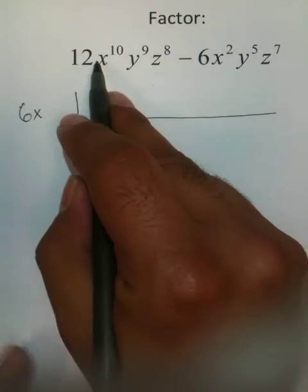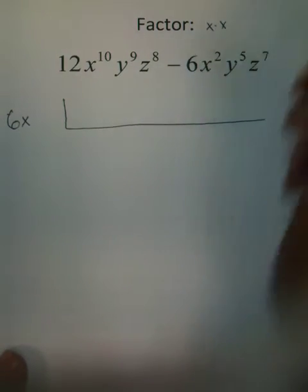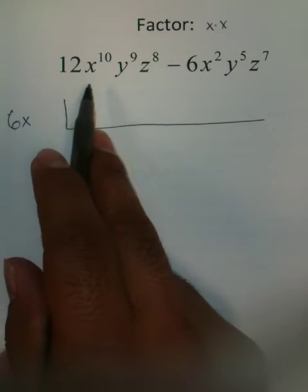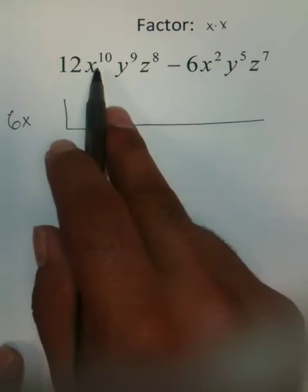Well, this has 10, and this has 2. And when I mean that, I'm literally saying this has 2 x's being multiplied together, and this has 10 x's being multiplied together. So, you can definitely pull 2 out of here, and you can pull 2 out of here.